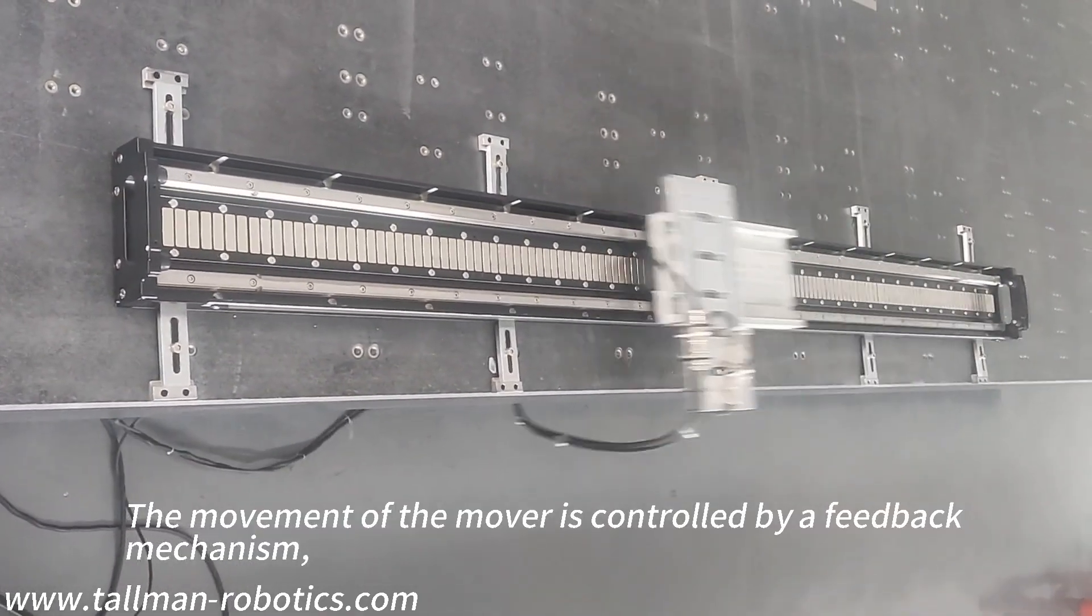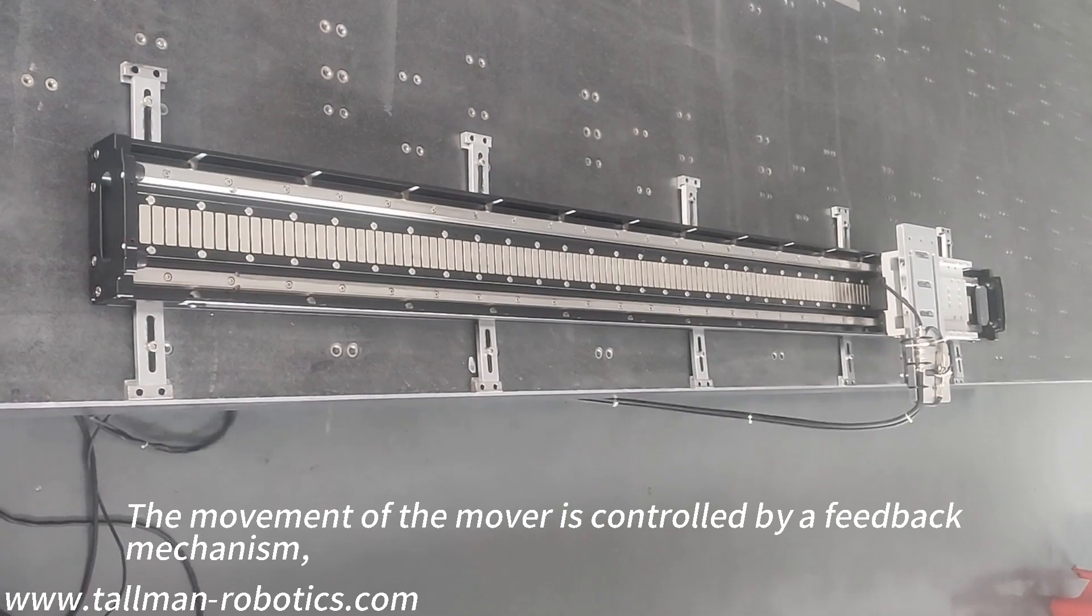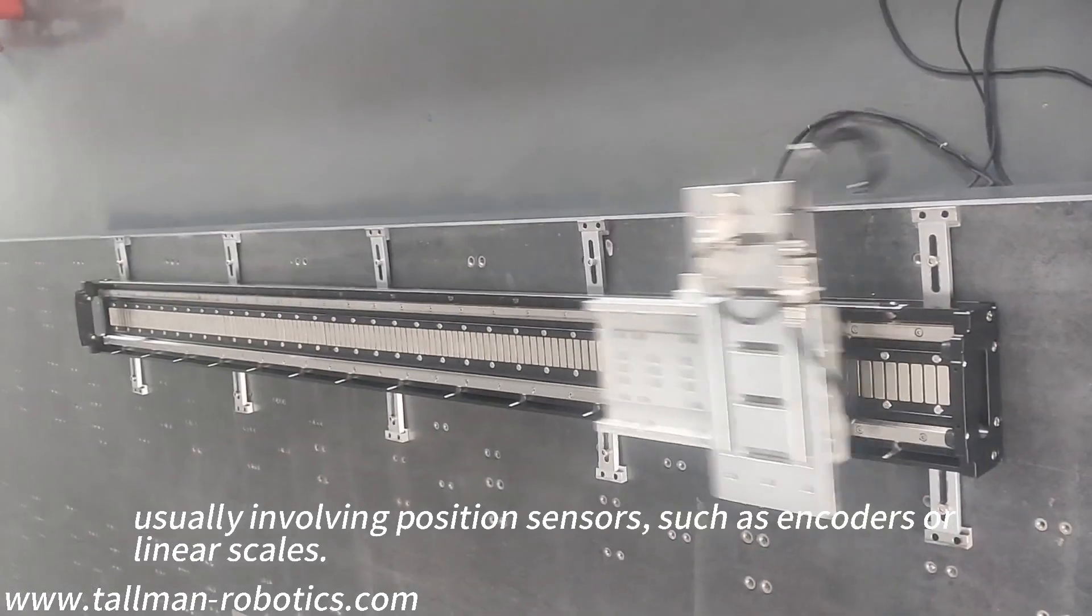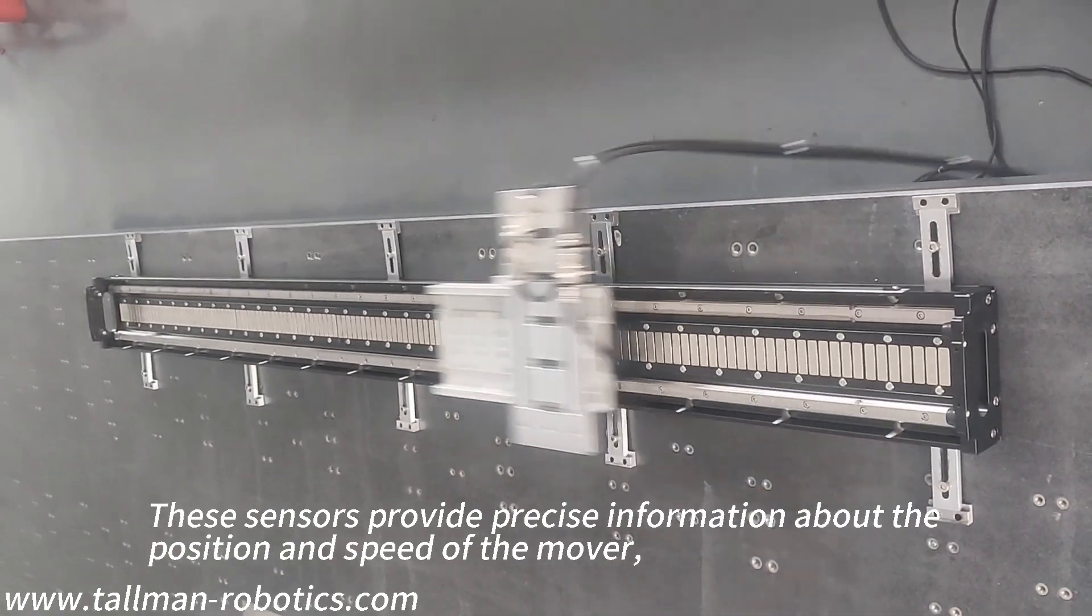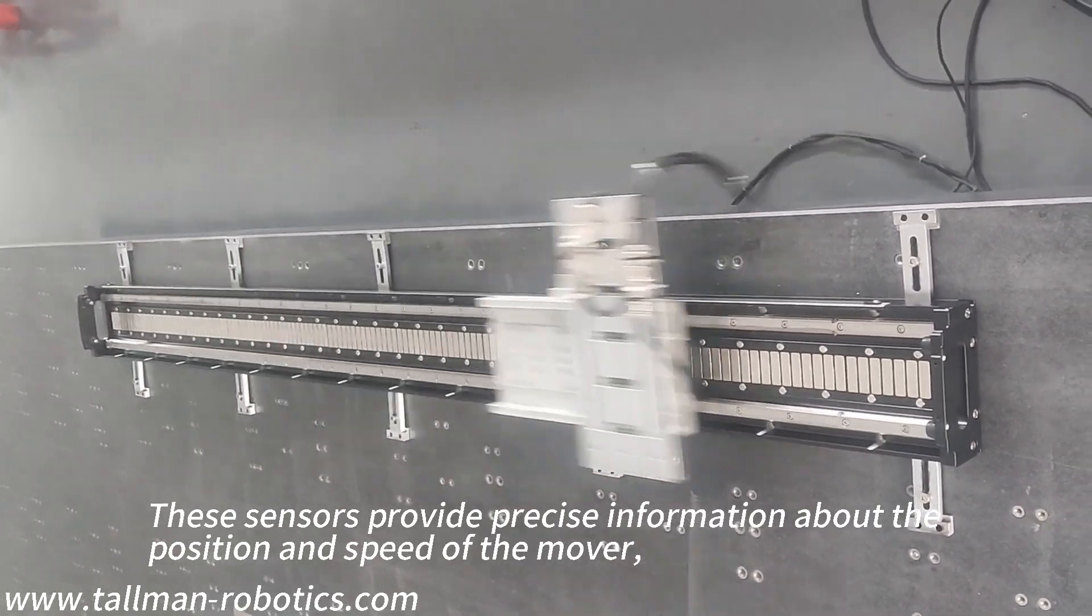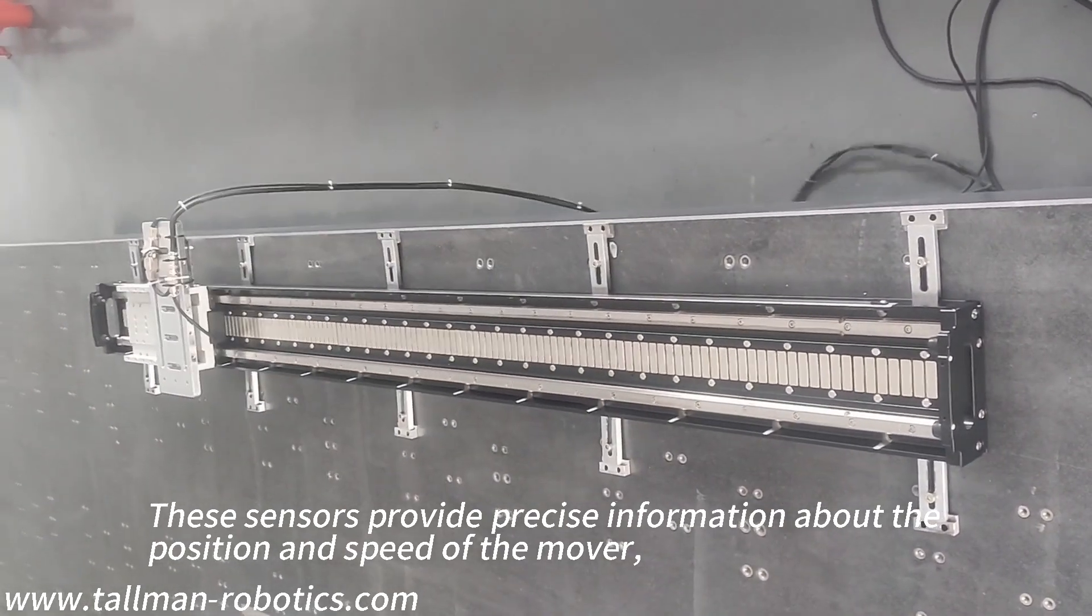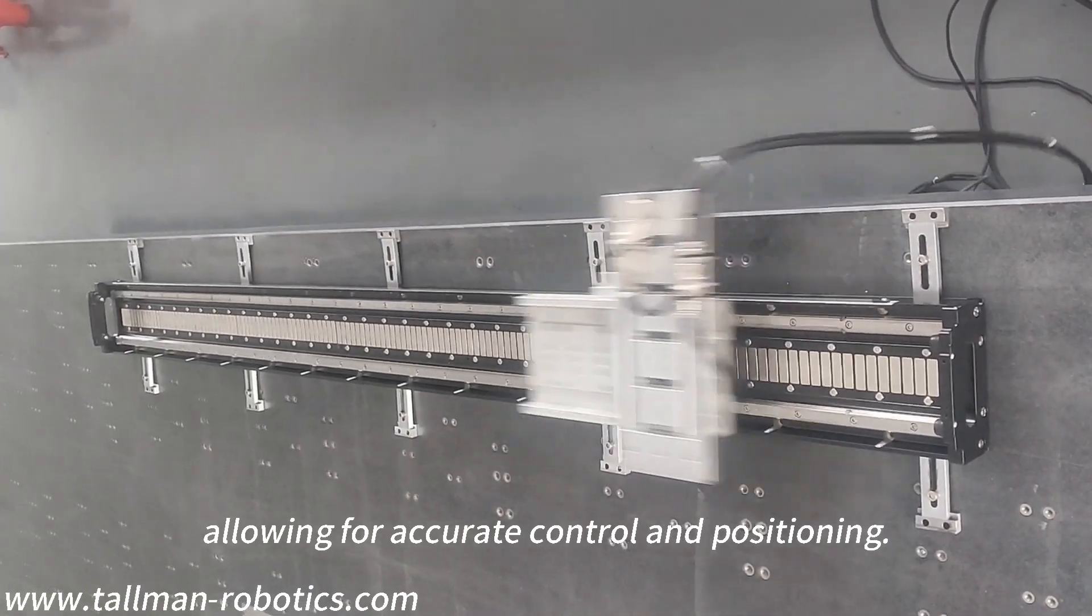The movement of the mover is controlled by a feedback mechanism, typically involving position sensors such as encoders or linear scales. These sensors provide precise information about the position and speed of the mover, allowing for accurate control and positioning.